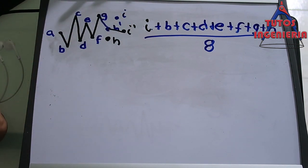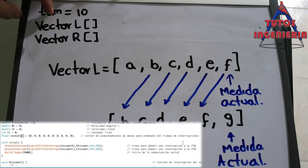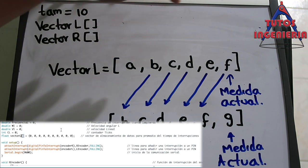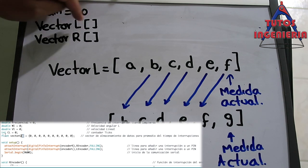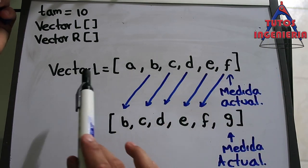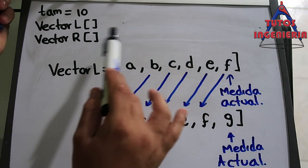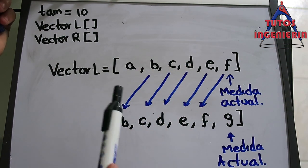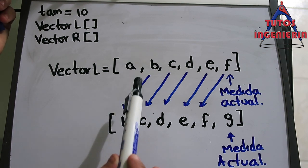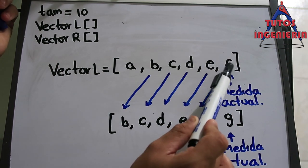It's very simple — you only have to calculate that one variable. In Arduino, we define a variable N equal to 10, which is the size of the vector. We generate two vectors: vector_l and vector_r, both arrays that save all the measurements. The vector_l is defined as an array containing measurements a, b, c, d, e, f — the last measurements we have.